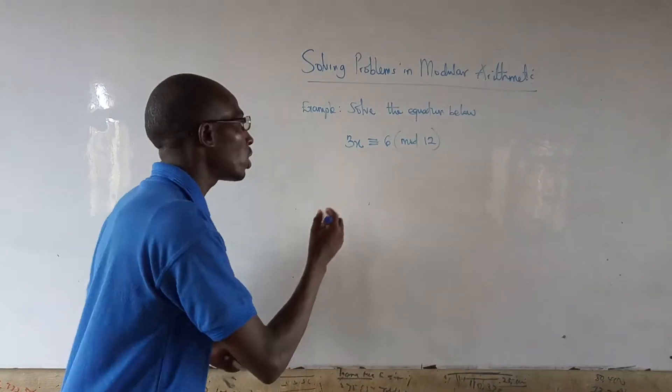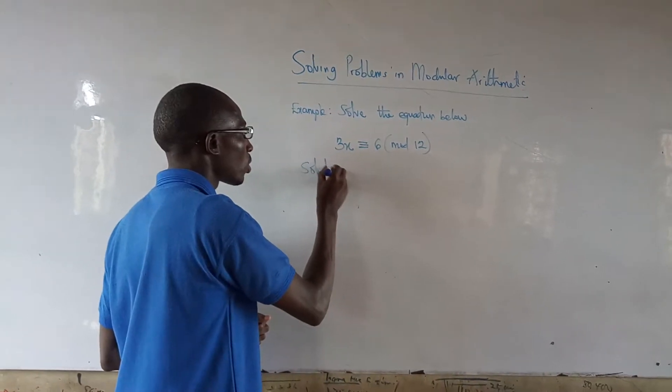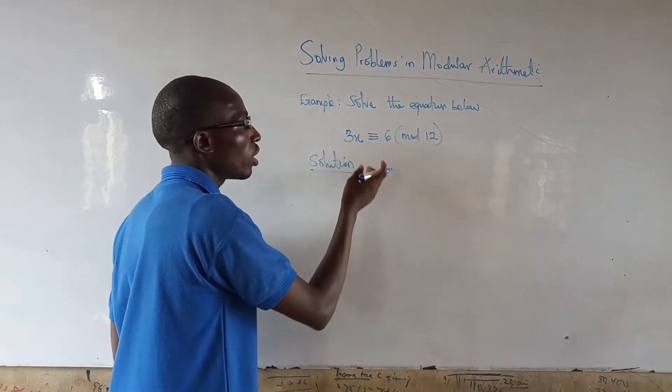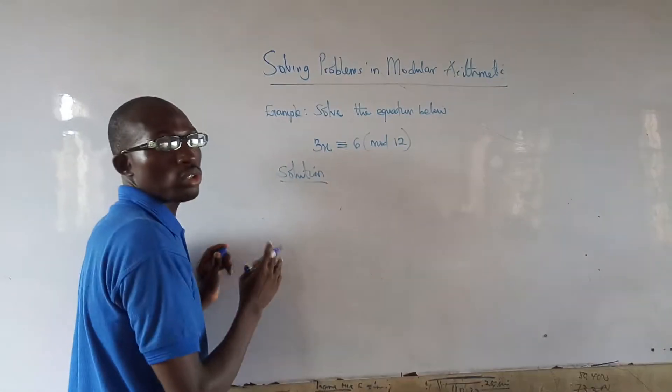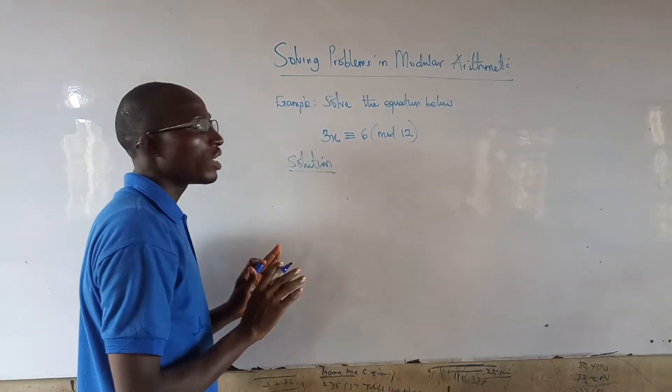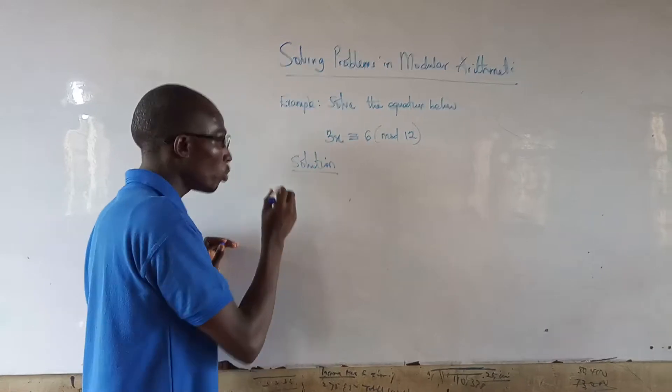So in this context now, when you have 3x congruent to 6 mod 12, you can approach this in the same platform. Method 1.